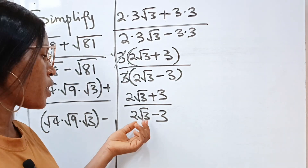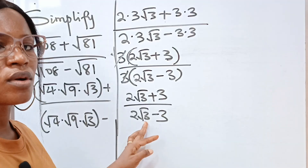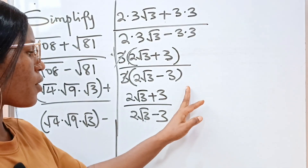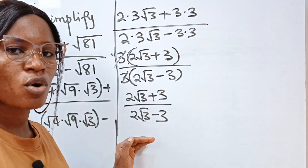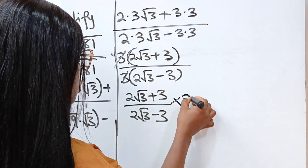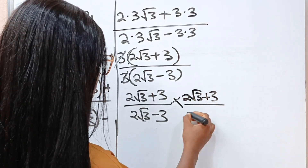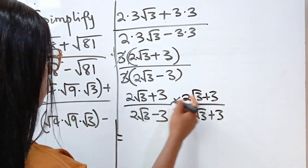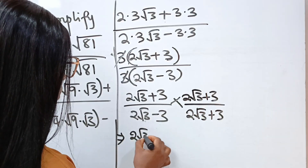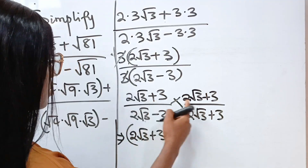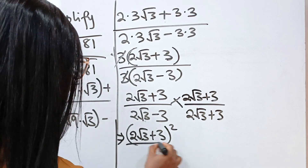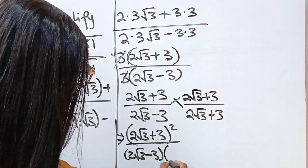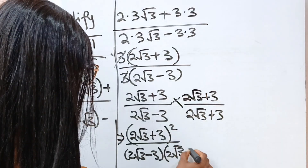So let us rationalize. To rationalize, we need the conjugate of our denominator. The conjugate of our denominator is 2 root 3 plus 3. So we are going to multiply our numerator and denominator by the conjugate. We multiply by 2 root 3 plus 3 over 2 root 3 plus 3. What we have in the numerator is 2 root 3 plus 3 squared, and the denominator is 2 root 3 minus 3 multiplied by 2 root 3 plus 3.